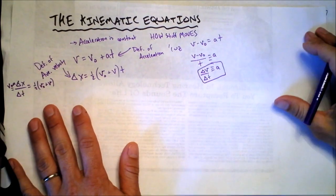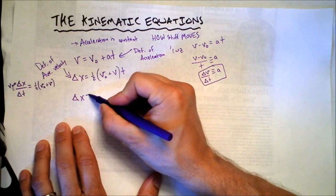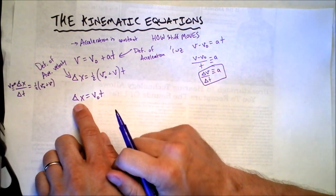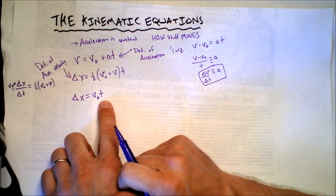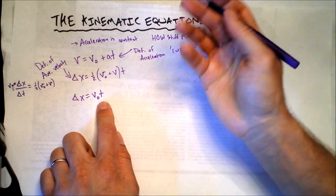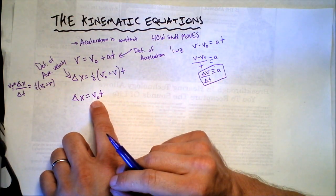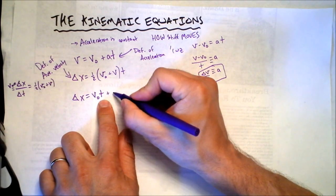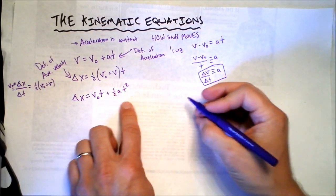The next kinematic equation is delta x equals v naught times t. This says that how far you've gone is how fast you were going times time. If there's no acceleration at all, this is how far you've gone. But if there's acceleration, we have to add one more term: plus one half acceleration times time squared.